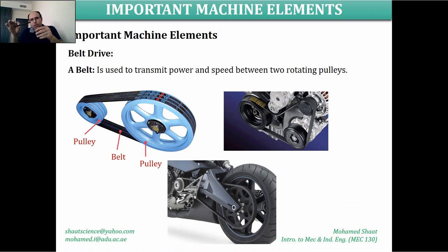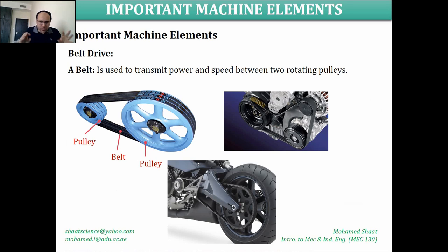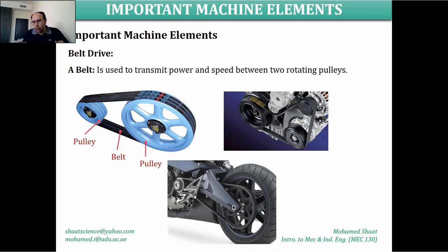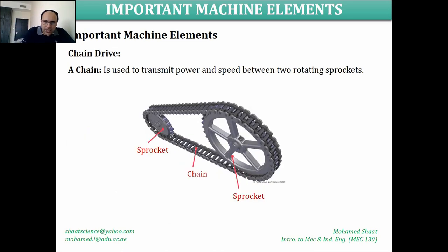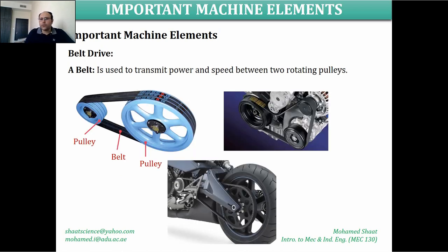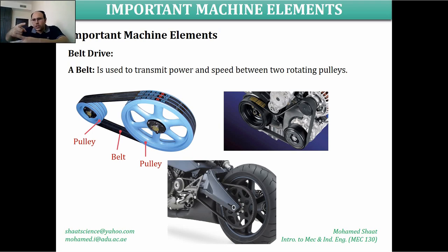Whether the shafts are parallel, perpendicular, intersecting, or non-intersecting, belts and chains transmit power between two rotating shafts, doing the same thing as gears. But what is the difference? Gears have teeth that engage and mesh with each other to transmit motion — this is known as positive action transmission of motion. There is no possibility for one gear tooth to skip or slide over another.